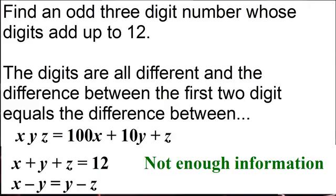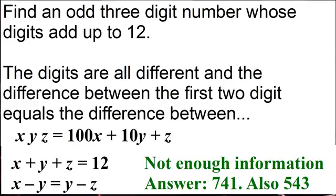because although seven hundred and forty-one does satisfy these constraints you also have five hundred and forty-three which is another odd digit number whose digits add up to twelve and the difference between the first two is the same as the difference between the second two. So it's actually lucky maybe they cut it out in the movie that seven hundred and forty-one was the correct answer but just from what we've heard in the movie we couldn't actually figure it out.